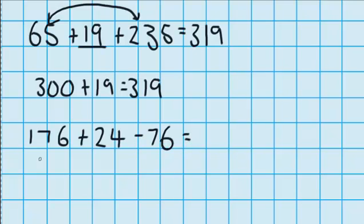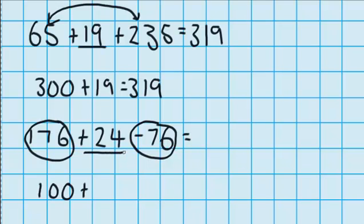So let's start by looking at these three numbers and see if there's any numbers here which we could put together. Well I've got 176 here and I need to take away 76. So that's going to be really easy if I put those two together. 176 minus 76 will leave me with 100. And then I just have to add this 24. So that means I must have 124 dollars left.